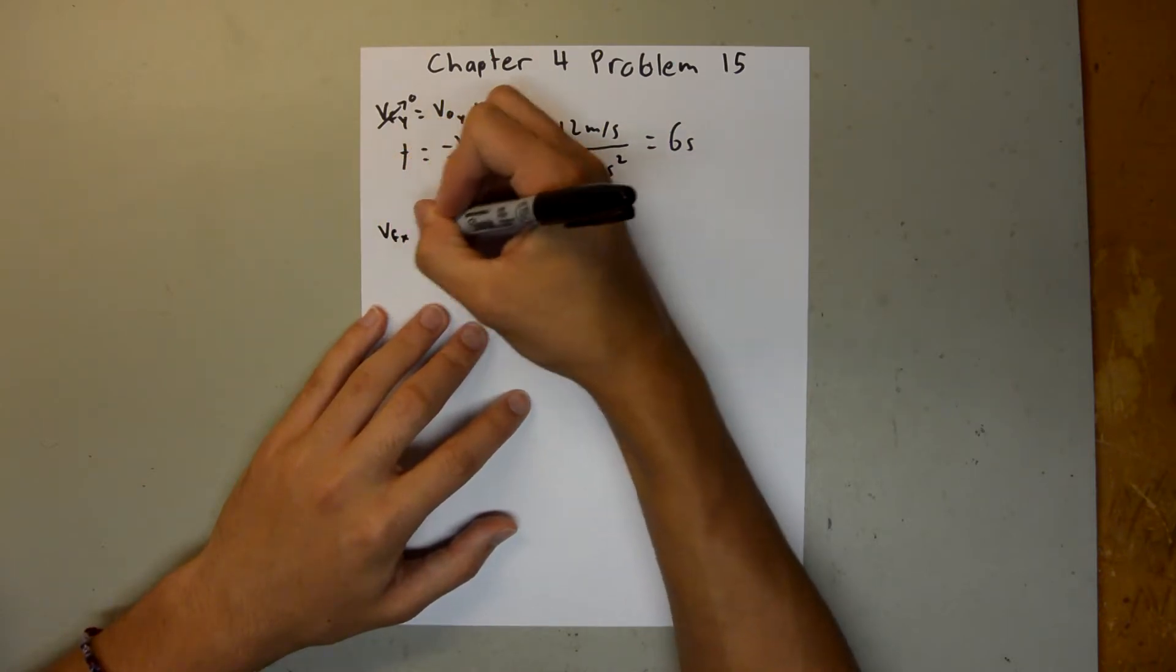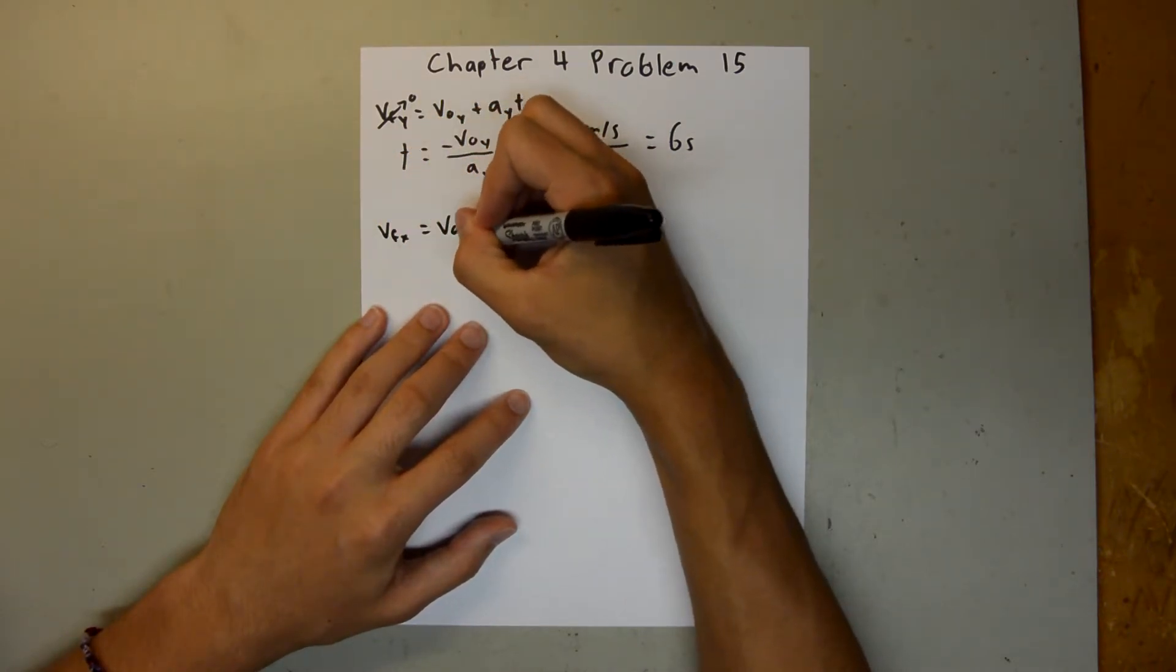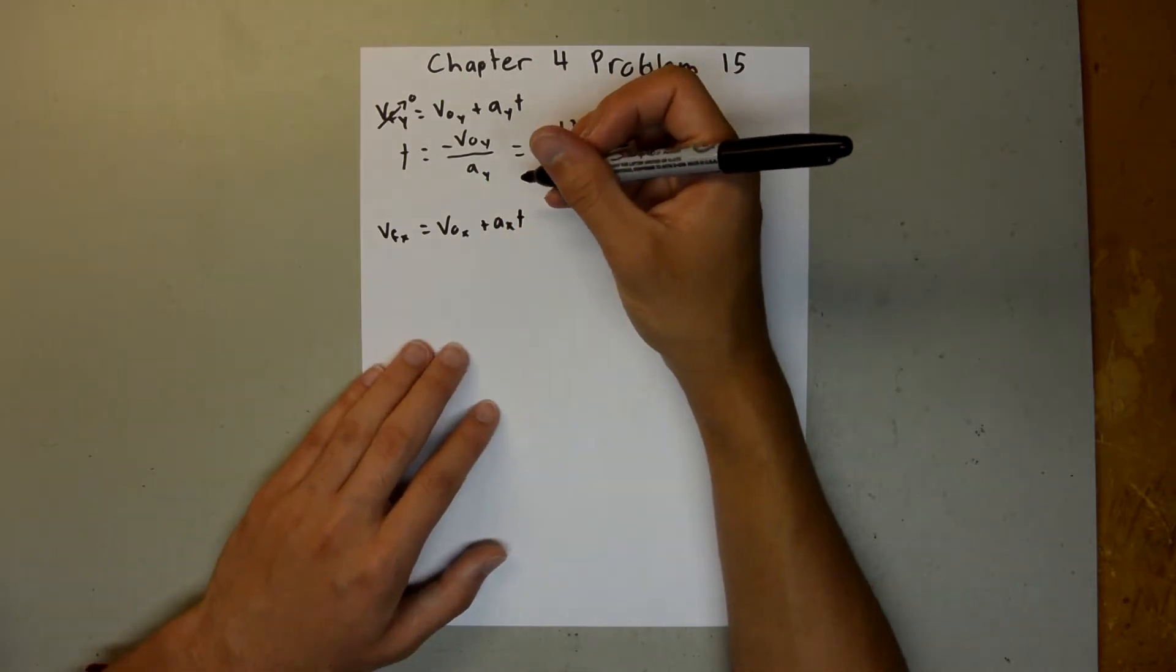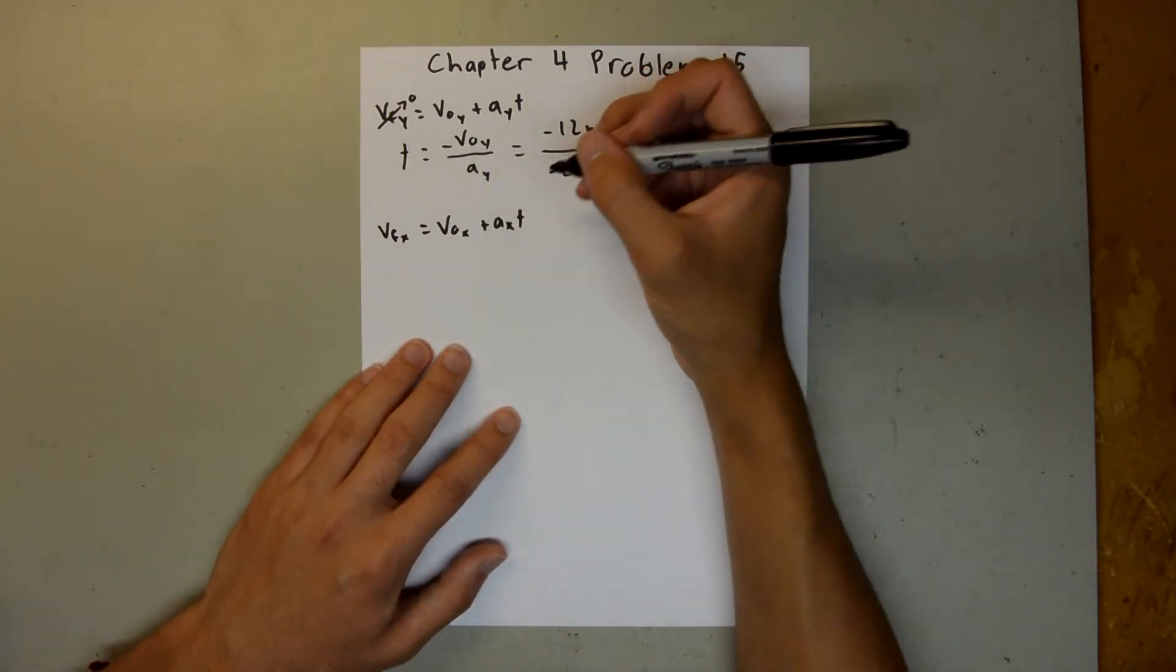And now for our x direction, we have velocity final x is equal to velocity initial x plus ax times t. And we have both of these values, so we can just directly plug them in.